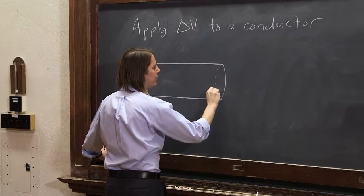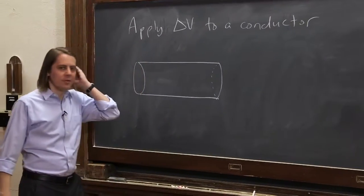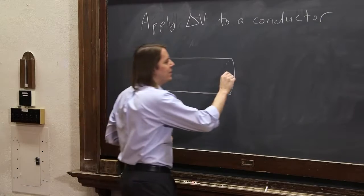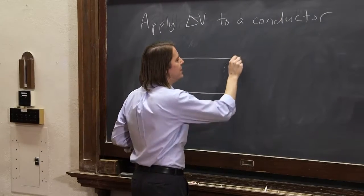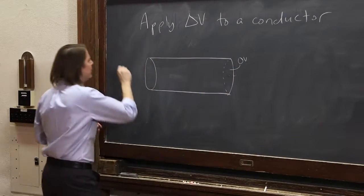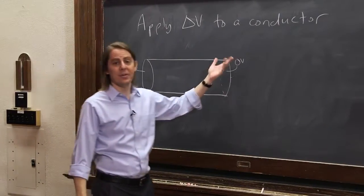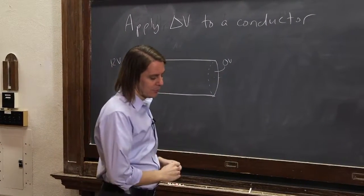So it was a conductor, and it was a cylinder. We attached it to a battery. So we forced this side to be at 0 volts and this side to be at 12 volts, based on our definition of the negative terminal being 0 volts.